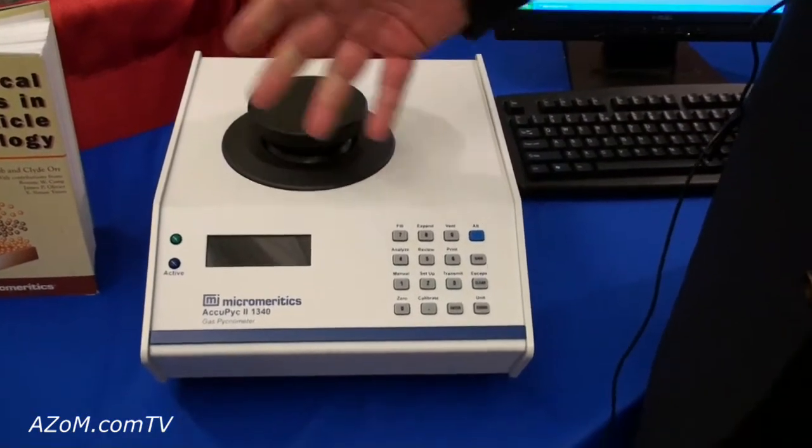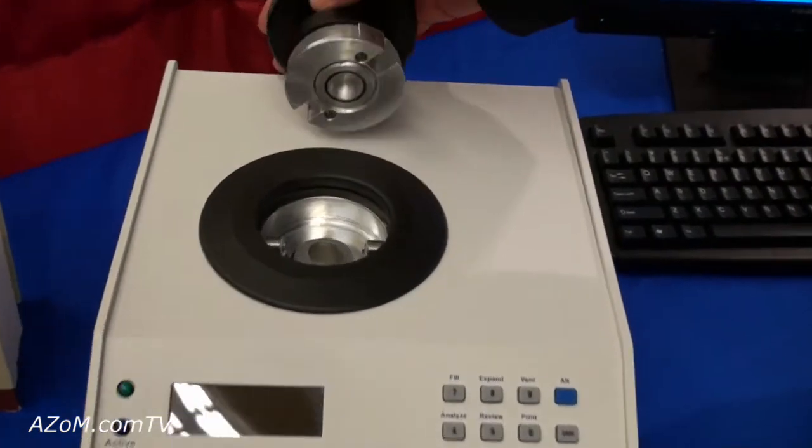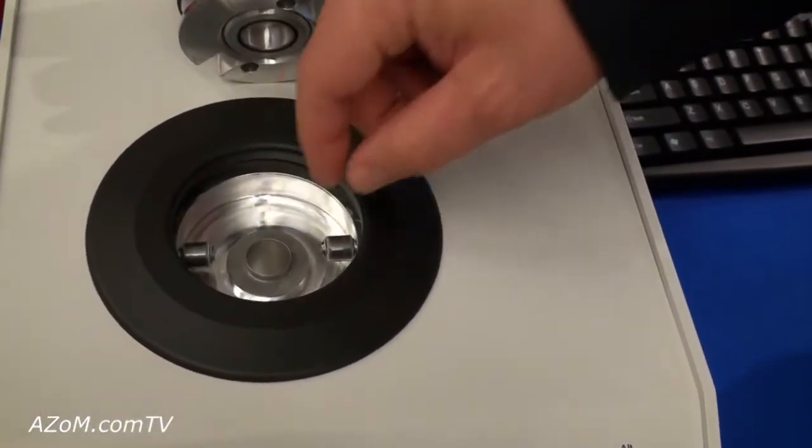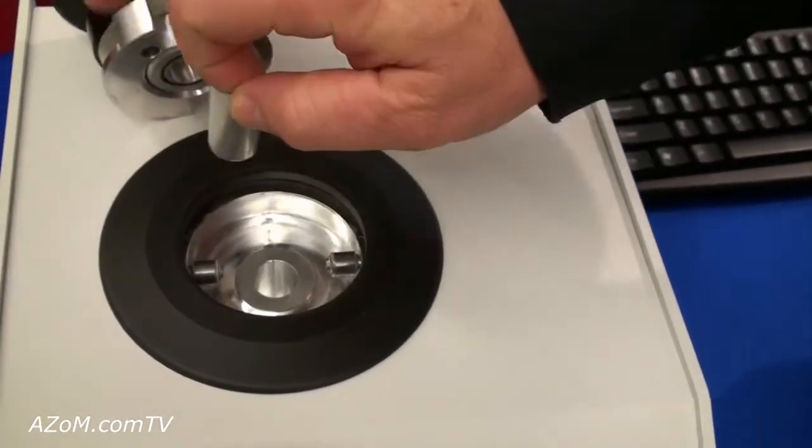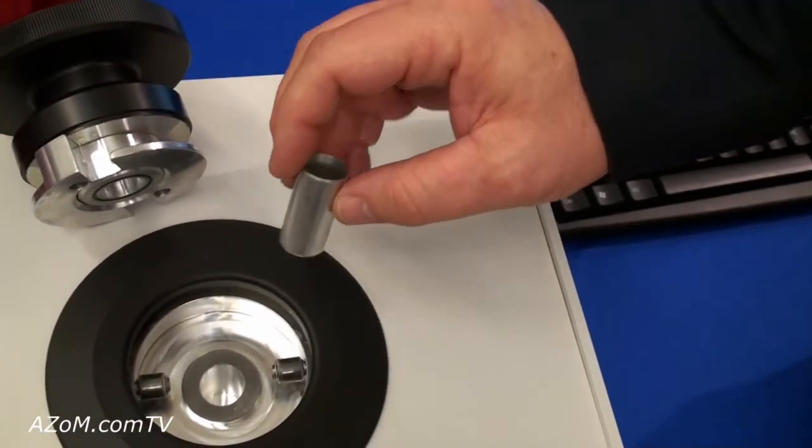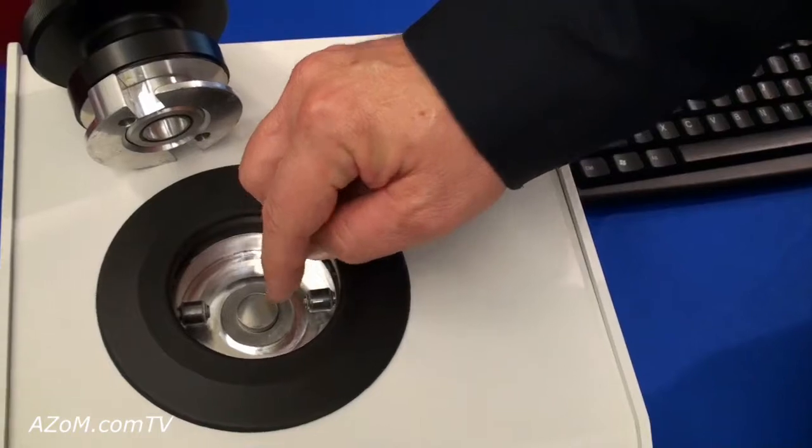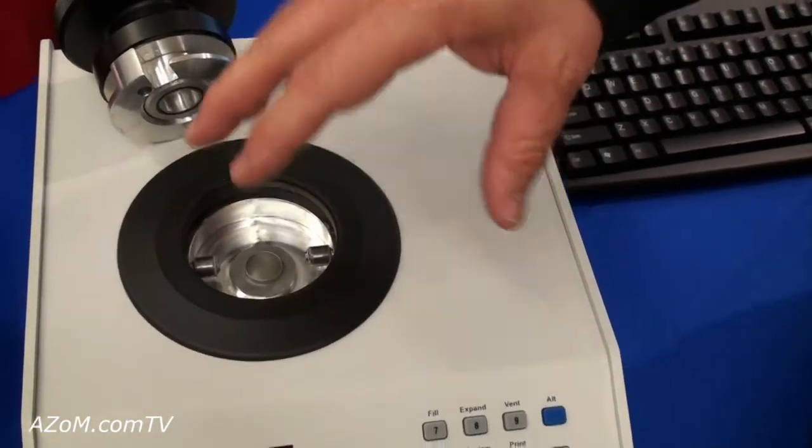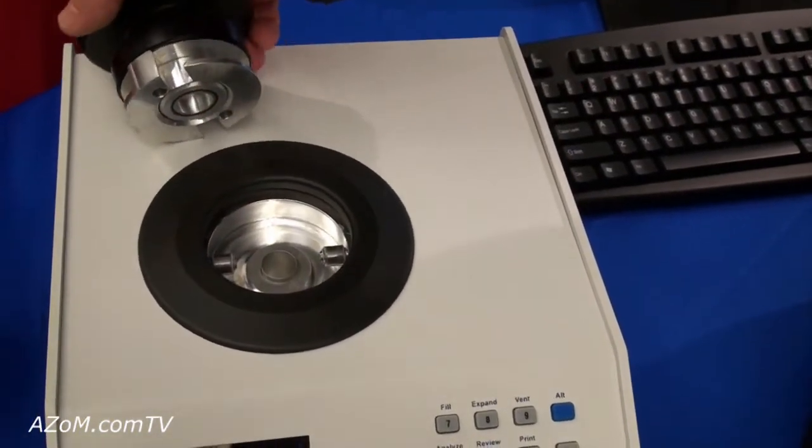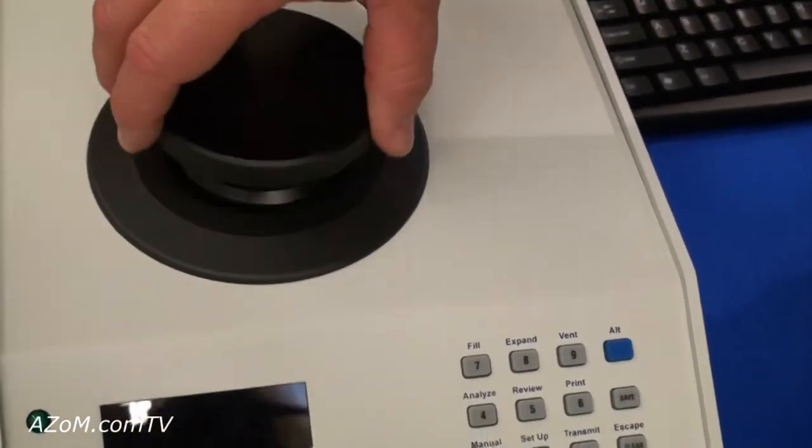The AcuPic has two chambers inside the system, one where a sample is placed. This is an example of our 10cc sample cup. We also have a 1cc sample chamber and a 100cc sample chamber into which the sample can be placed. In fact, we have custom designed these for a number of needs that people express in sizes that fit the particular sample sizes that they require.